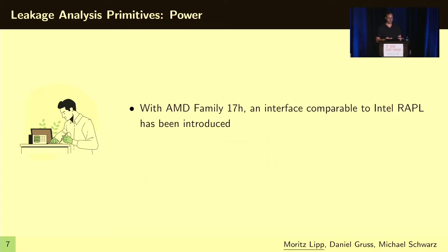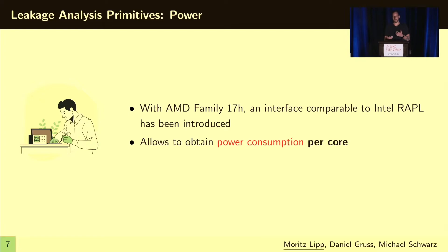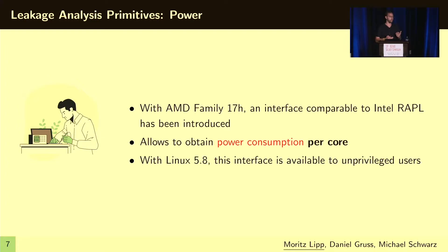On the other hand, with family 17H, an interface comparable to the Intel RAPL interface was introduced to AMD microarchitectures. It gives you the ability to obtain the power consumption per individual core, which is a bit different than on Intel CPUs. With Linux 5.8, this interface is also available to unprivileged users, so you can mount software-based power side-channel attacks.